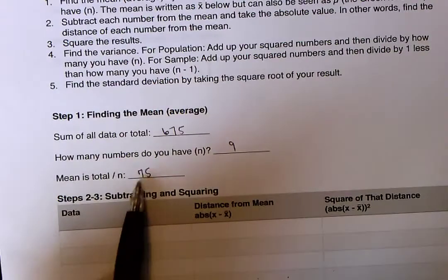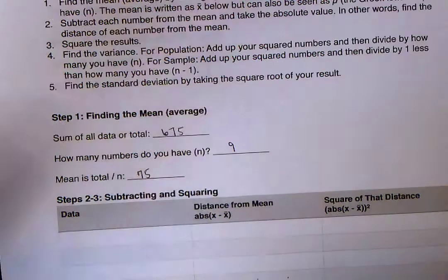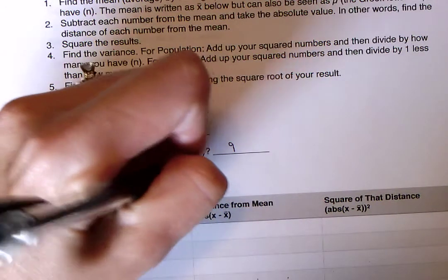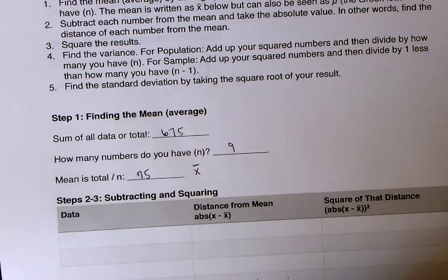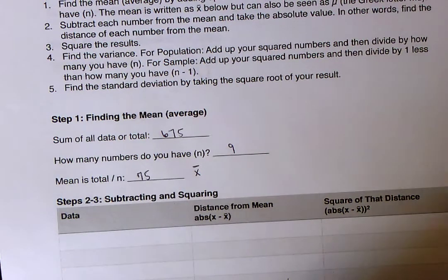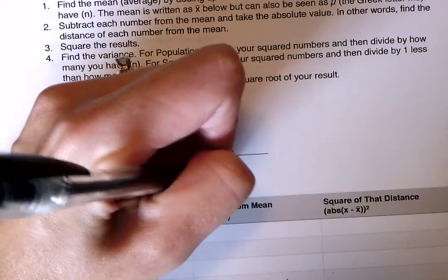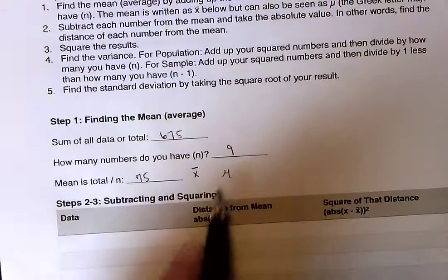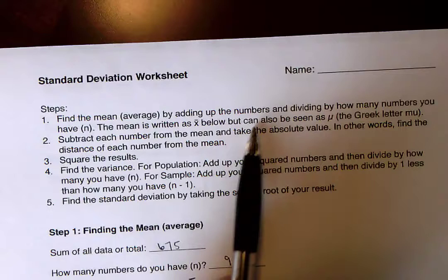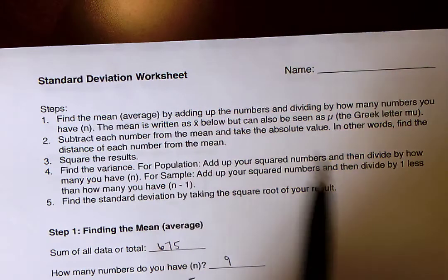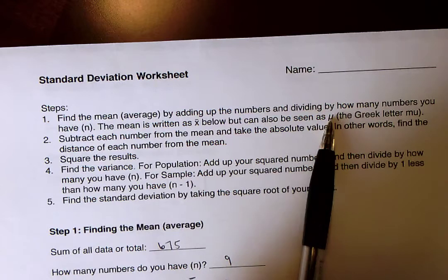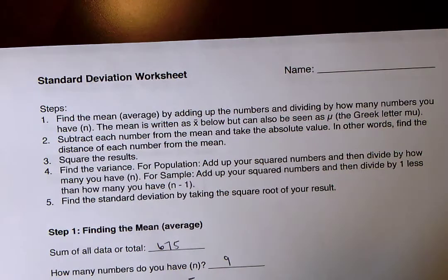And again, another symbol for the mean is x bar. You'll see that in the table we have here. And it can also be seen as the Greek letter mu. It looks kind of like this funky little symbol here. But yeah, I wrote that up here for you. The mean is written as x bar, and it can also be seen as mu.